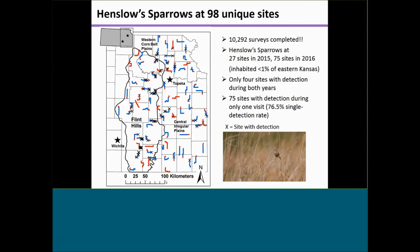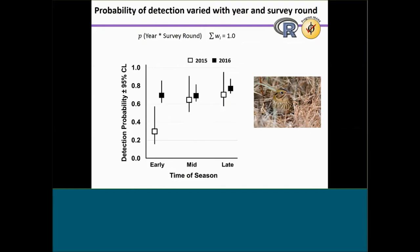All in all, we conducted over 10,000 surveys during the study. We detected Henslow's sparrows at 27 sites in 2015 and 75 sites in 2016. During any given period of either breeding season, sparrows inhabited less than 1% of eastern Kansas. We only had four sites with detections during both years, and of the 98 unique sites where we ever detected sparrows, 75 sites had a detection during only a single visit — a really strong pattern of birds appearing and disappearing between seasons and within breeding seasons. Overall detectability was around 70%, imperfect but not terrible.